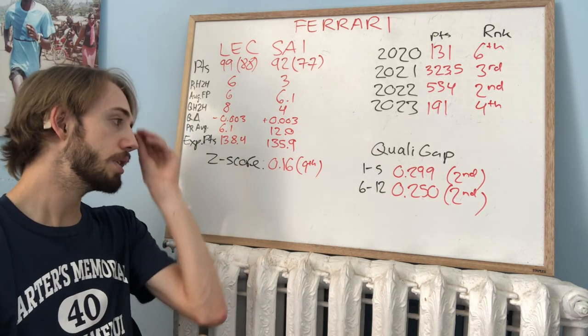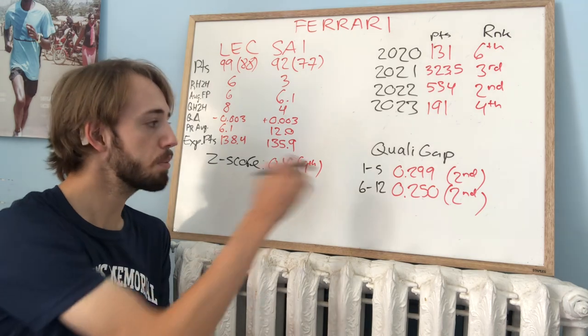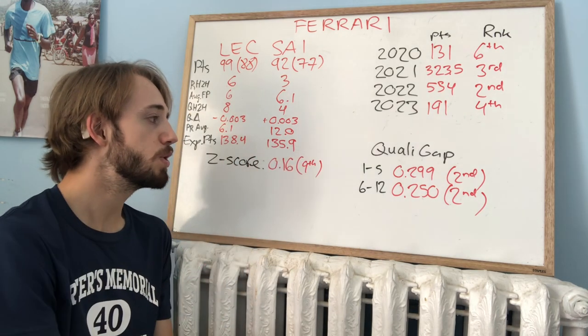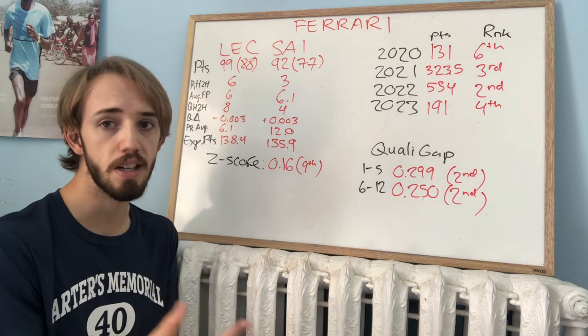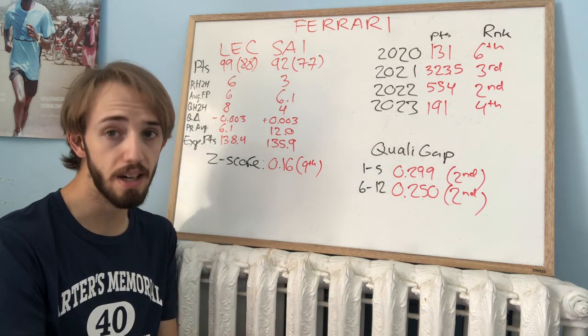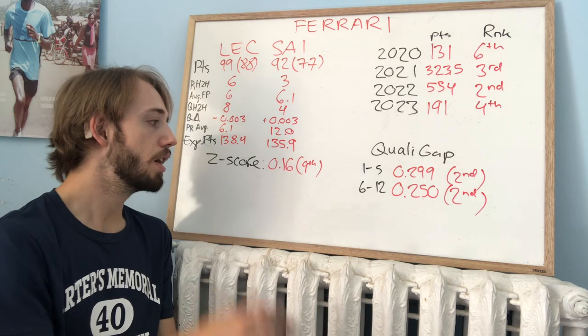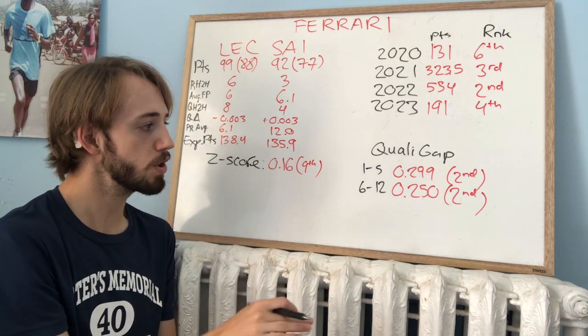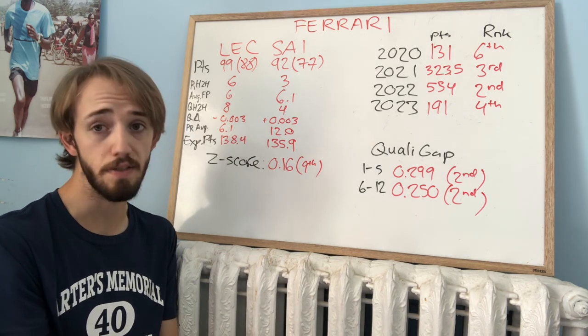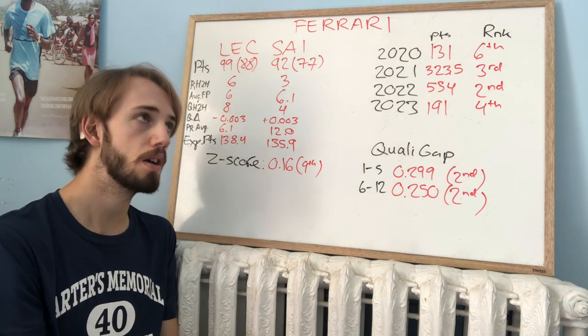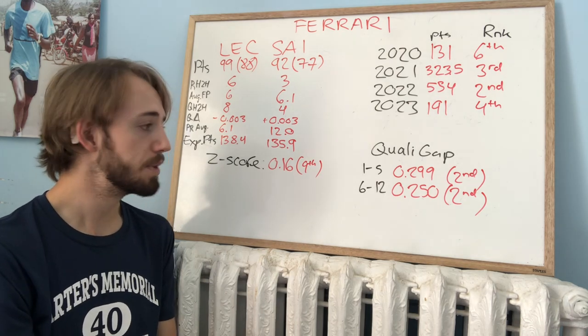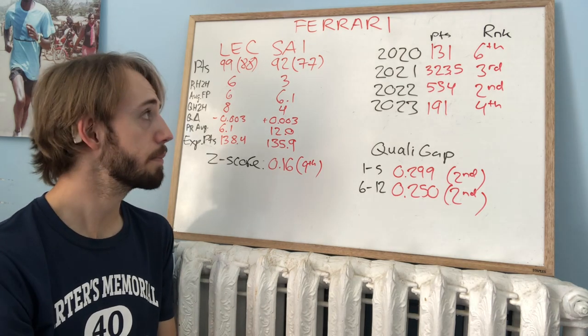Looking at qualifying gap progression through the year. From races 1 to 5, 0.229 seconds, so about 3 tenths of a second, which put them second, of course, behind Red Bull. Races 6 through 12, still second. But 0.25, so a quarter of a second basically. Gap on average. So a little bit smaller of a gap. But still second by a good margin.